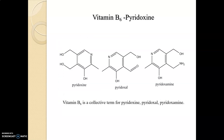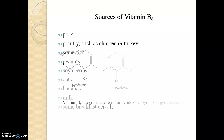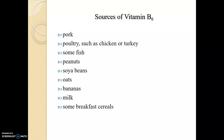The next vitamin is vitamin B6, also called pyridoxine. Vitamin B6 is a collective term for pyridoxine, pyridoxal, and pyridoxamine. These are the structures. Sources of vitamin B6 include pork, poultry, some fish, peanuts, soya beans, oats, bananas, milk, and some breakfast cereals.